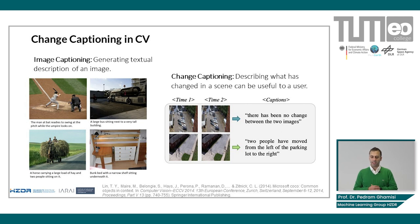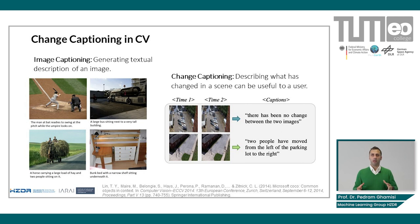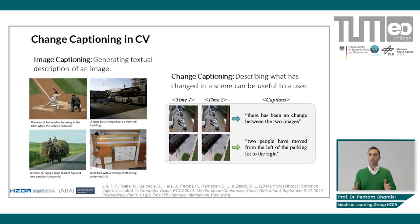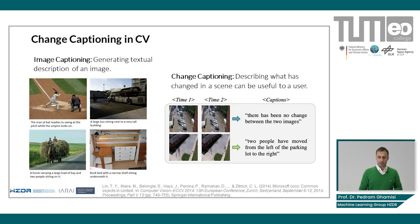What we want to do in change captioning is to describe what has changed in a scene, which is useful for a user. As mentioned before, the amount of multi-modal and multi-temporal data in the remote sensing community is exponentially increasing, so it would be very useful to develop automatic approaches to interpret changes in multi-temporal time series of data. This is what we do with change captioning.